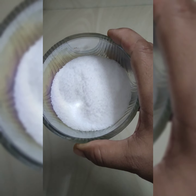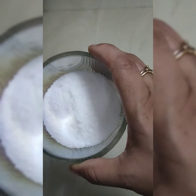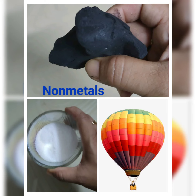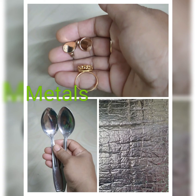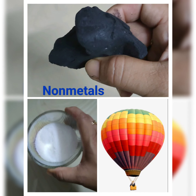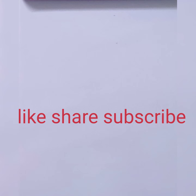Non-metals are non-lustrous. As you can see here, this floor cleaner consists of chlorine — it doesn't shine. And this salt contains iodine, which is a non-metal; it is also not shining and doesn't have a lustrous property. This is the basic physical difference between metals and non-metals.